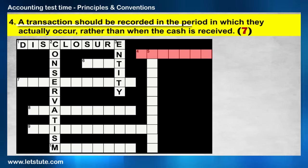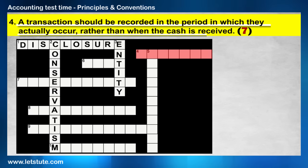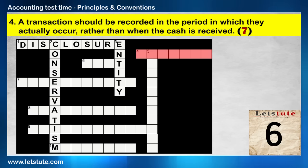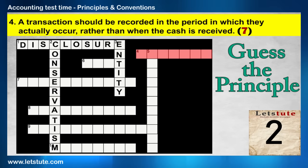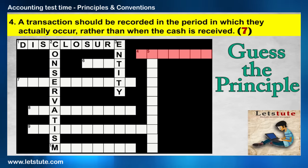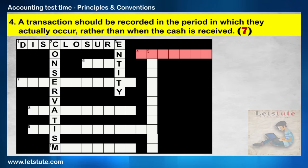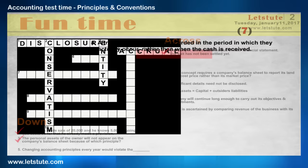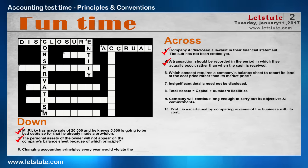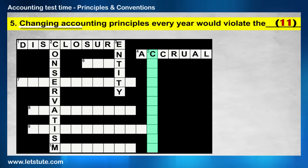The fourth one is across: A transaction should be recorded in the period in which it actually occurs, rather than when the cash is received. Which principle states this? Think about the principle. It's the accrual principle.